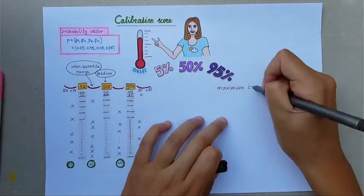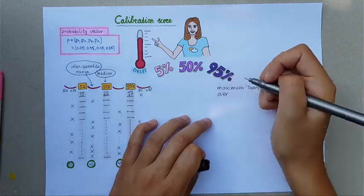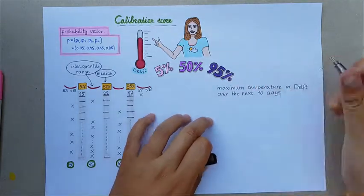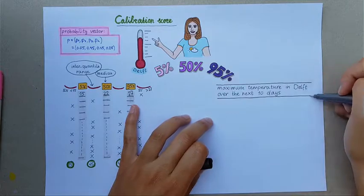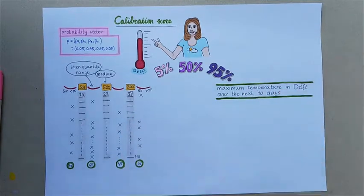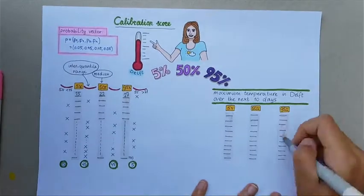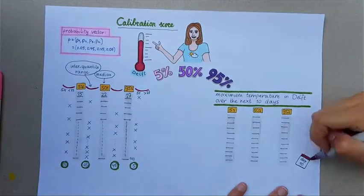Let's take an example of an expert's assessment for 10 calibration questions. Assume all our weather-related questions, asking about the maximum temperature in Delft over the next 10 days. The three quantile assessments are provided. Assume we wait 10 days and get the realizations for all the 10 questions.